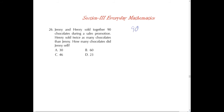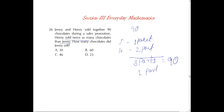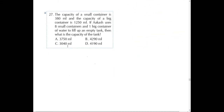Now moving to Section 3 — Everyday Mathematics. Question 26: Jenny and Harry sold together 90 chocolates. Harry sold twice as many chocolates as Jenny. If Jenny sold one part and Harry sold two parts, the total is three parts = 90 chocolates, so one part = 30. Jenny sold 30 chocolates, which is option A.